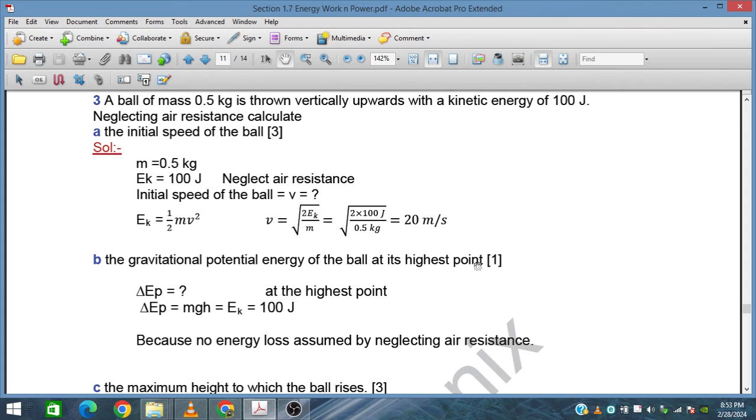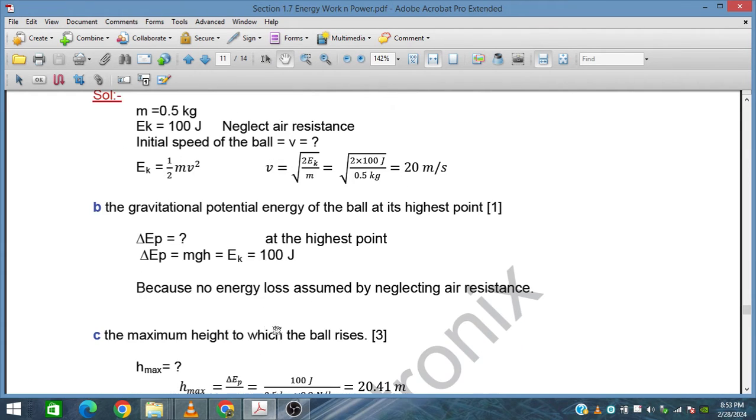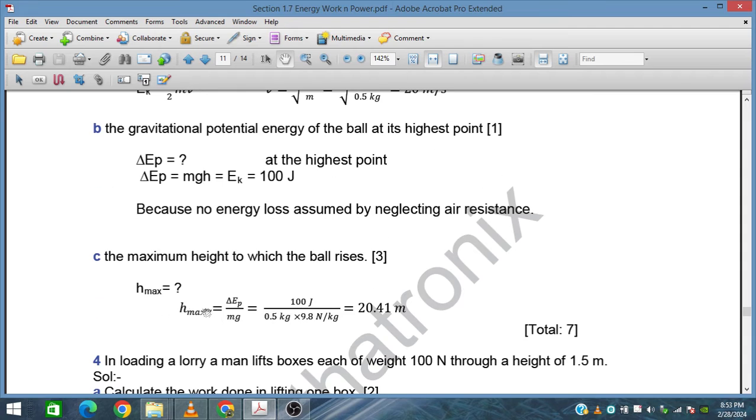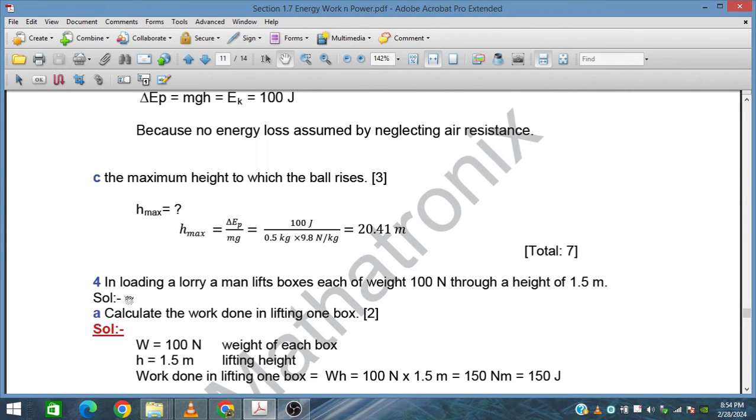The gravitational potential energy of the ball at its highest point: At the highest point the energy will be 100 joules because no energy loss is assumed by neglecting air resistance. The maximum height to which the ball rises: height = ΔEp / (mg), which equals 20.41 meters.